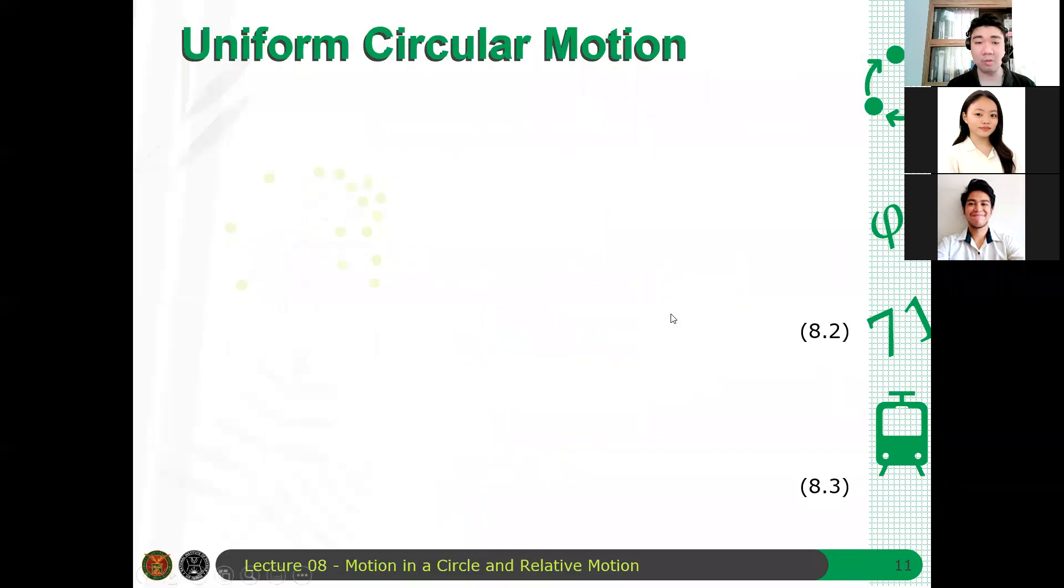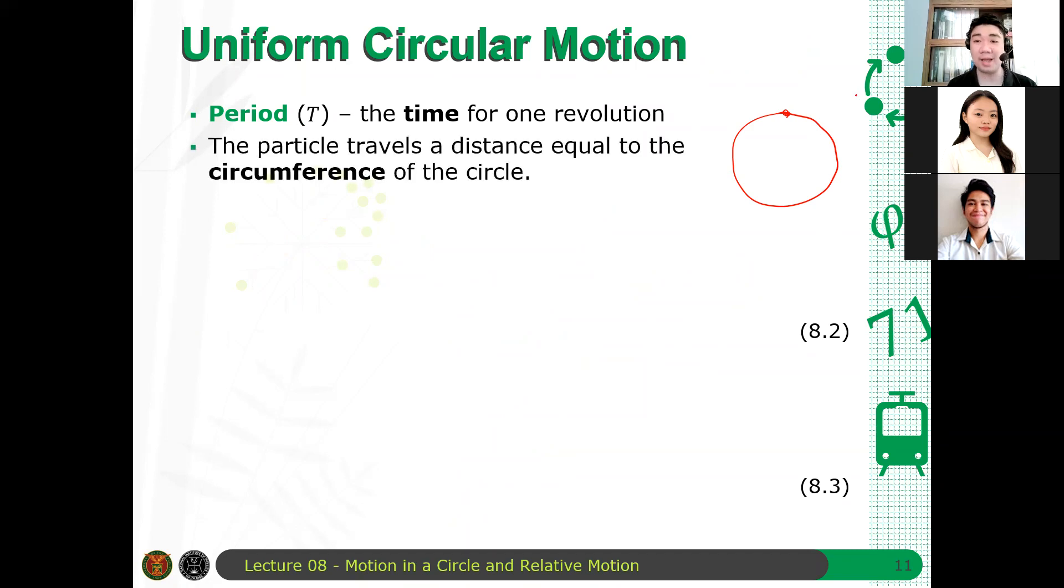Now, so, ngayon, siyempre, pag umiikot ang isang object sa bilog, meron niyang time it takes for it to reach its original position. So, for example, if a car travels initially at this point and reaches the same point after some time, the time it took for it to reach the initial point is called the period of revolution. So, it's the time for one revolution of a particle. So, pwede mong isipin na, it traveled at one circumference. It's a circumference of the circle. Therefore,